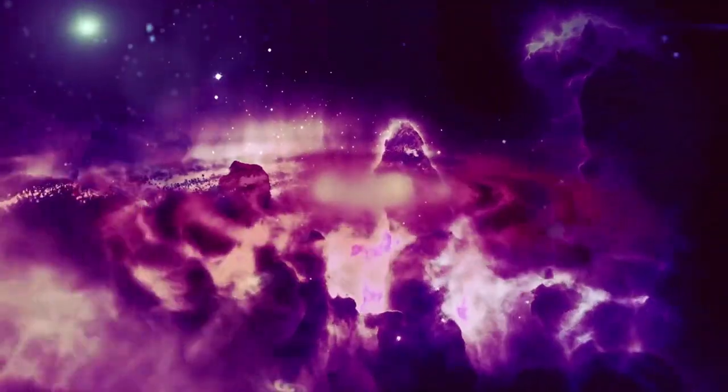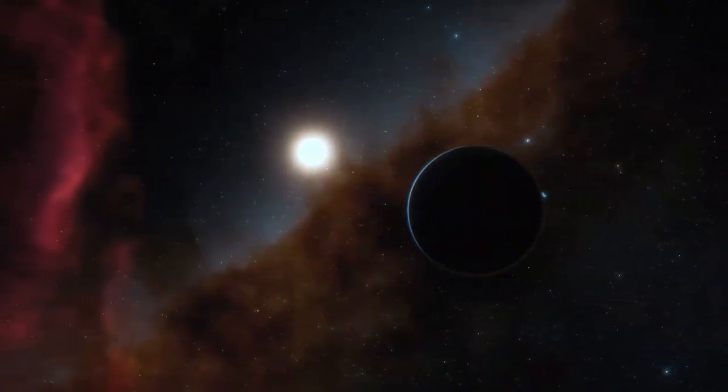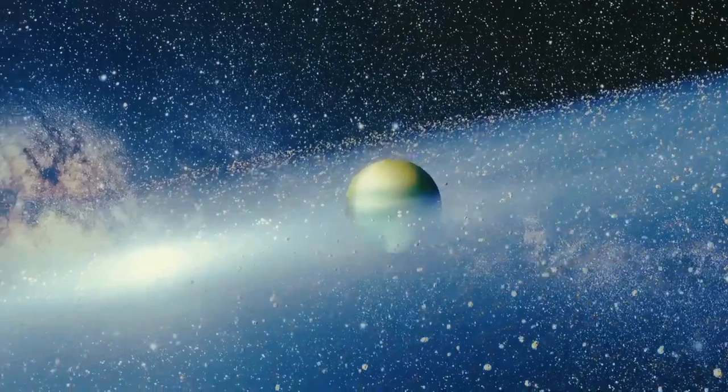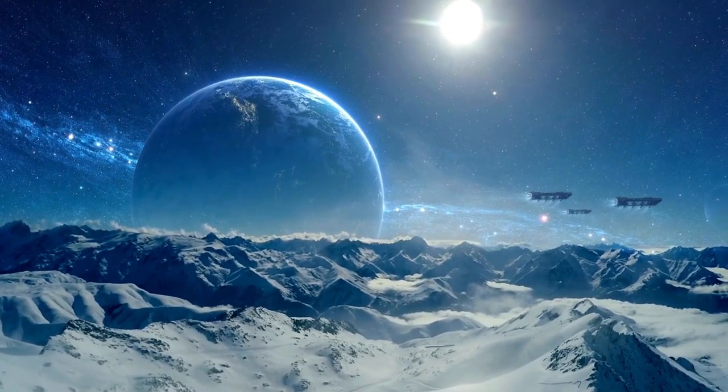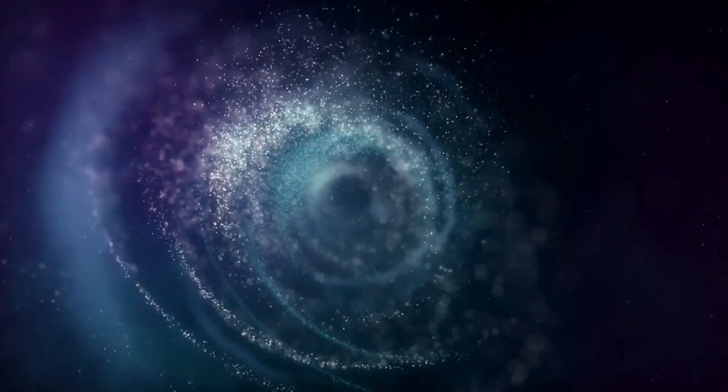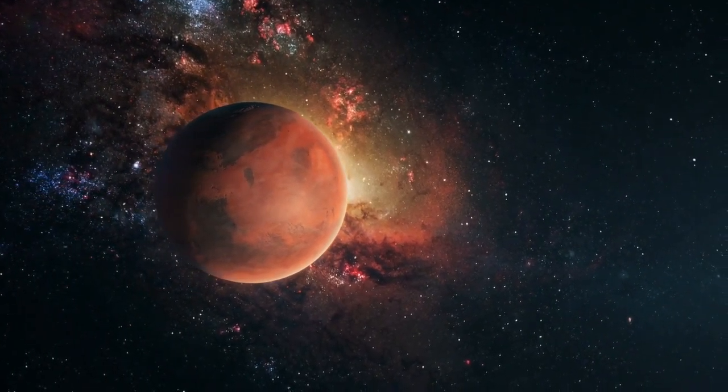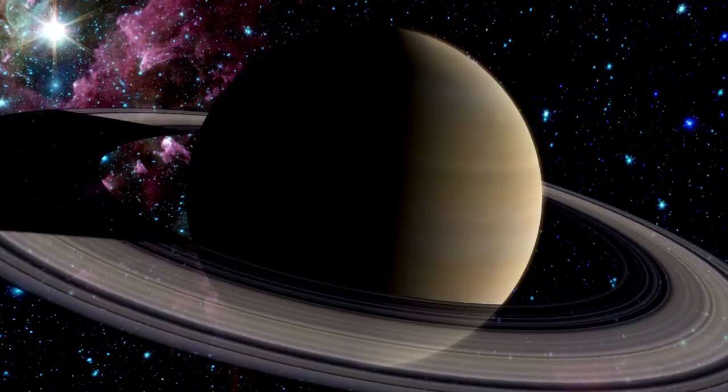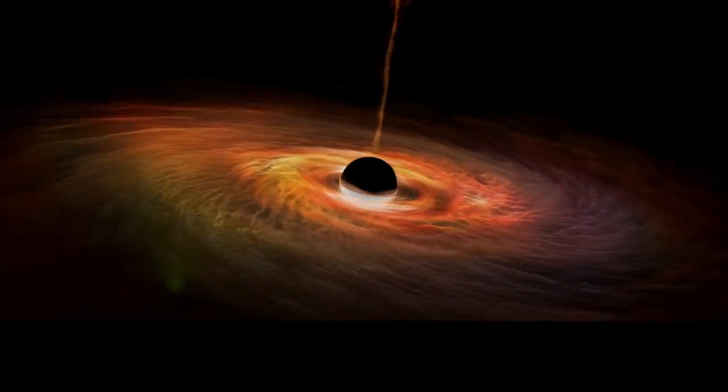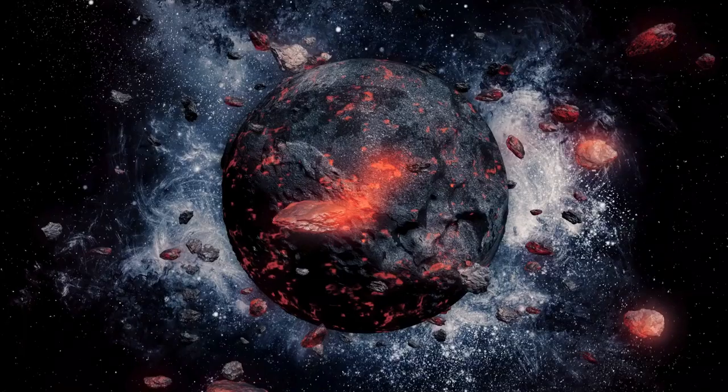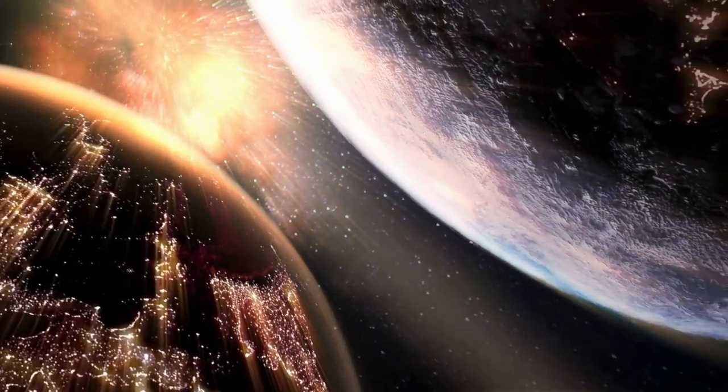Meanwhile, the supermassive black holes at the centers of the Milky Way and Andromeda will play a pivotal role in shaping the future of the merged galaxy. These behemoths, each millions of times more massive than our Sun, will eventually spiral toward each other under the influence of gravitational waves emitted as they orbit closer and closer. The final stages of the black hole merger will be cataclysmic, releasing enormous amounts of energy into space in the form of gravitational waves and radiation. This merger event will create a single, even more massive supermassive black hole at the heart of the newly formed galaxy, surrounded by a swirling accretion disk of gas and dust.